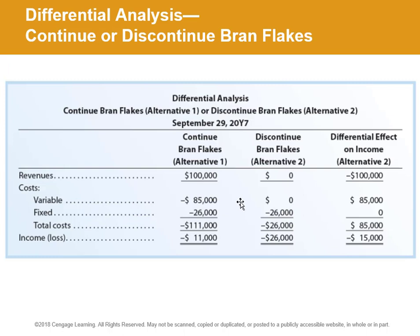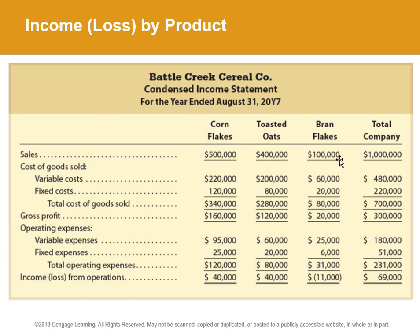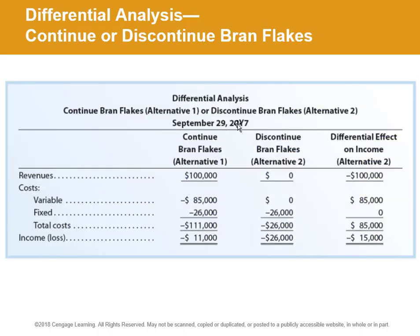Here's our differential analysis. If we continue Brand Flakes, they've got revenues of $100,000 and an $11,000 loss. Now if we discontinue them — if we get rid of Brand Flakes — the revenue and the variable costs are gone, but the fixed costs of $26,000 stay. So with Brand Flakes, we're losing $11,000, but discontinuing Brand Flakes, we're losing $26,000. The reason is we're losing the contribution margin: $100,000 minus $85,000 equals a $15,000 contribution margin.